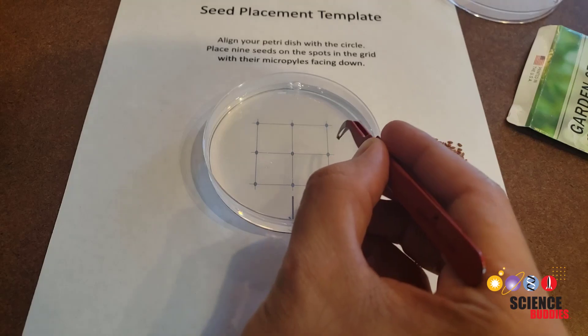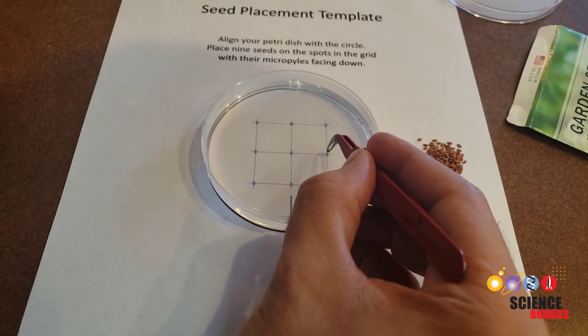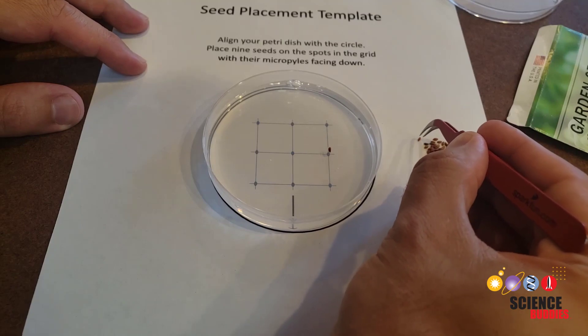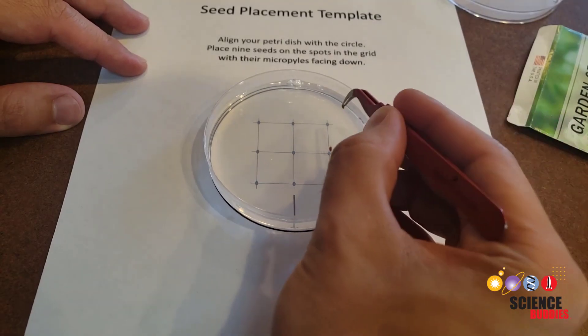Depending on the size of your seeds, you can use tweezers or your fingers to embed them about halfway in the agar. To make sure they still have access to oxygen, avoid submerging them completely.